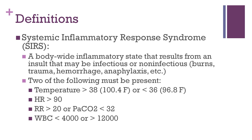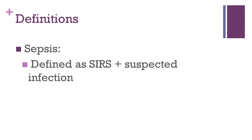To meet criteria for SIRS, the patient must have two or more of the following: fever or hypothermia, as indicated by temperature either greater than 38 degrees or less than 36 degrees; tachycardia with a heart rate greater than 90 beats per minute; tachypnea as evidenced by respiratory rate greater than 20 or a PaCO2 less than 32; and either leukocytosis with a white blood cell count greater than 12,000 or leukopenia with a white blood cell count less than 4,000. So to be defined as having sepsis, a patient must have a suspected infection and also meet criteria for SIRS.